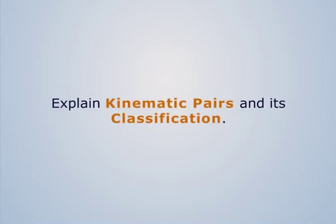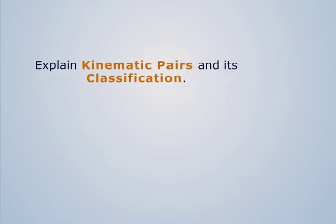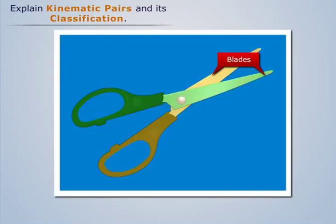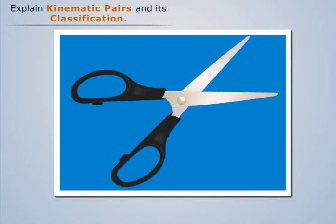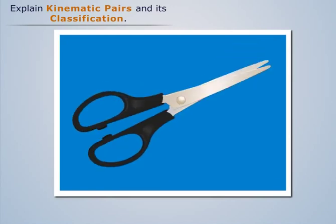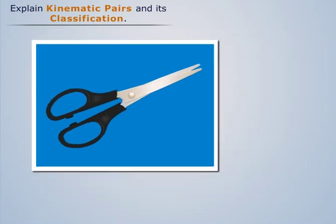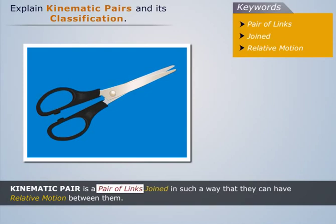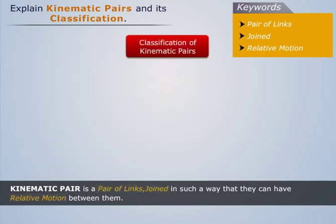To explain kinematic pairs, let's consider a pair of scissors. It has two blades with handles joined together by a screw in such a way that they can have some relative motion between them. Such a pair in which the elements have relative motion is known as a kinematic pair. Thus, a kinematic pair is defined as a pair of links joined such that they can have relative motion between them.